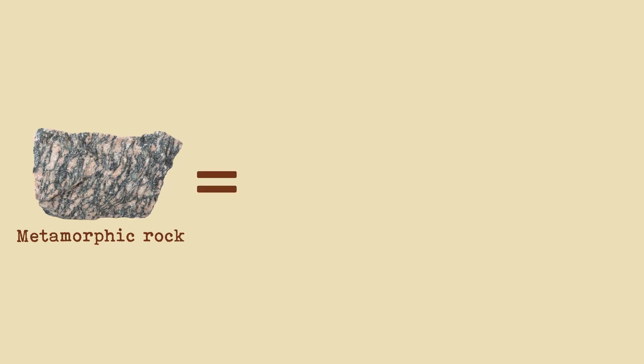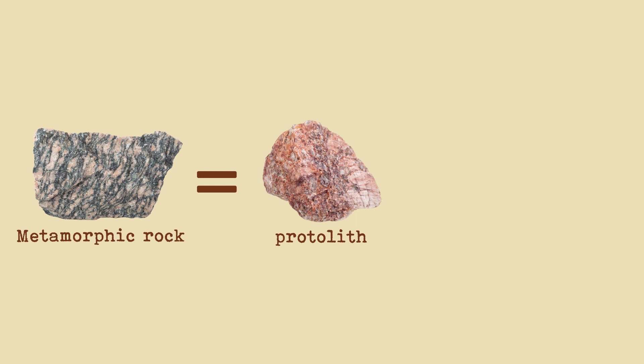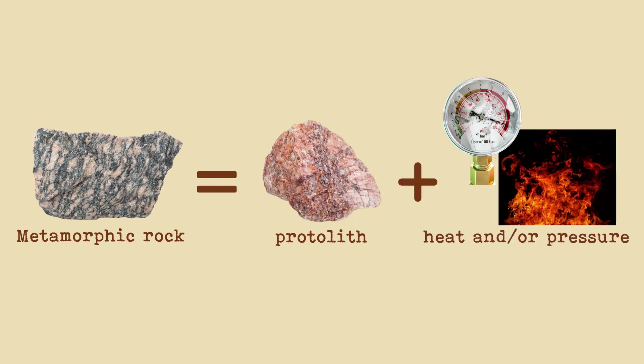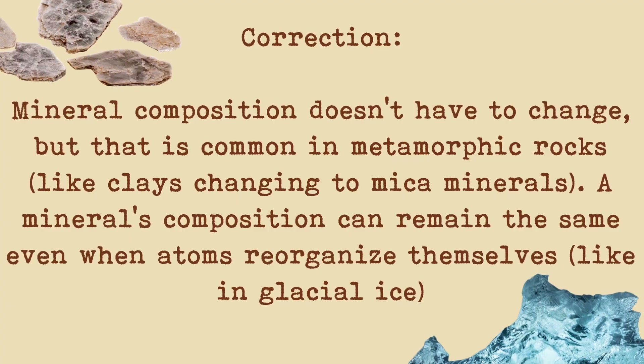A metamorphic rock is the product of when a parent rock, or a protolith, goes under intense heat or pressure, or both, and turns into something new. The minerals in metamorphic rocks go through recrystallization, which is what happens when the atoms rearrange themselves to become a different mineral.